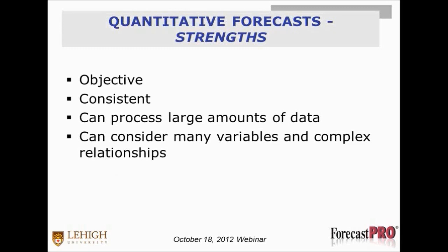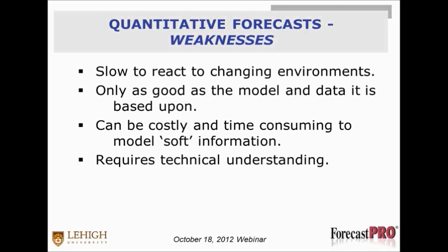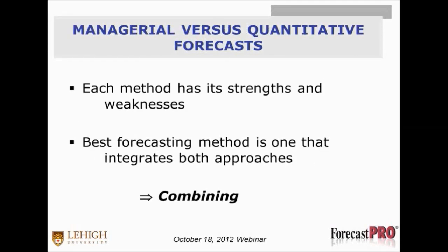Quantitative forecasts, as far as strengths: they're objective, consistent, can process large amounts of data, consider many variables and complex relationships. This is where big data analytics comes in, where we can understand causalities we never thought existed. But quantitative forecasts do have weaknesses — they're slow to react to changing environments. They're only as good as the model and the data they're based upon. Always question whether the data is clean. And they can be costly and time-consuming to model soft information.